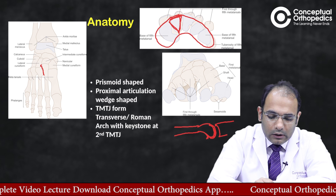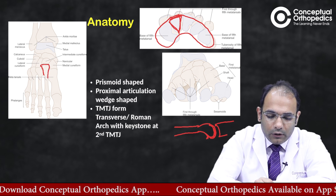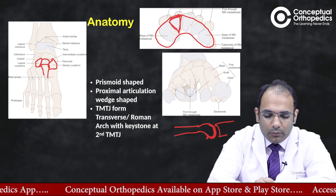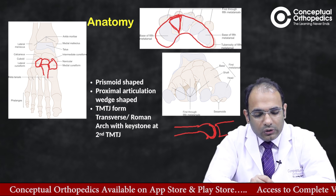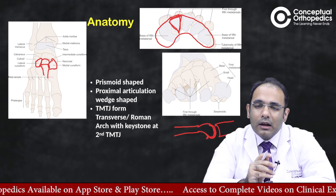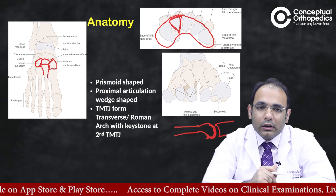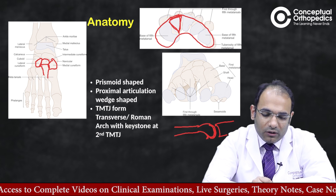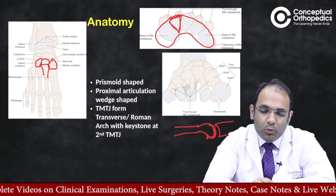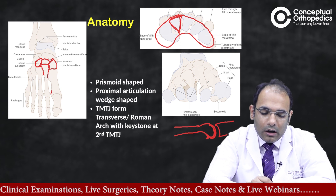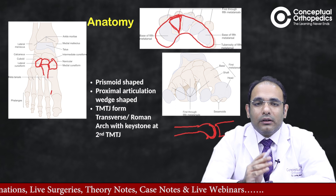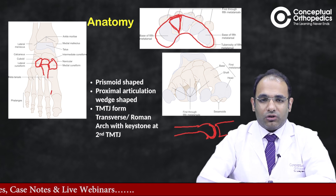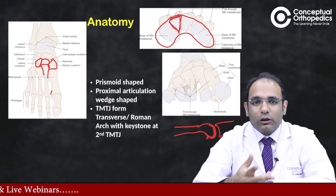The second metatarsal forms a very stable articulation with all three cuneiforms — medial, middle, and lateral — as well as with the first and second metatarsals. This is why the second TMT joint is the most stable with minimal movement. Because of this lack of movement, stress is transmitted around the second metatarsal shaft, making the second metatarsal one of the most commonly affected bones in stress fractures. The third metatarsal is the next most common, also due to its stable joint arrangement.